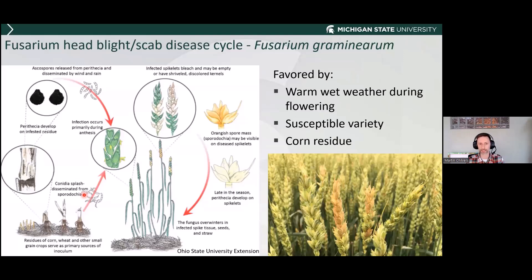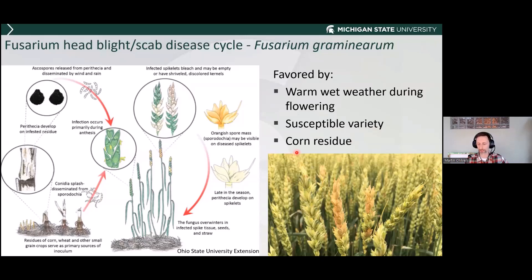Let's talk about head scab. It likes warm and wet conditions, so if we get warm and wet conditions during flowering, that's really going to promote head scab. The head scab pathogen, Fusarium graminearum, is also a pathogen of corn, so it can survive on corn residue, release spores, and infect the flowers, resulting in scab. Other factors to think about include variety susceptibility — there are tremendous differences among varieties, so being aware of what you are growing is super important. Ideally we don't want to plant wheat into corn residue because that increases the risk for head scab development.